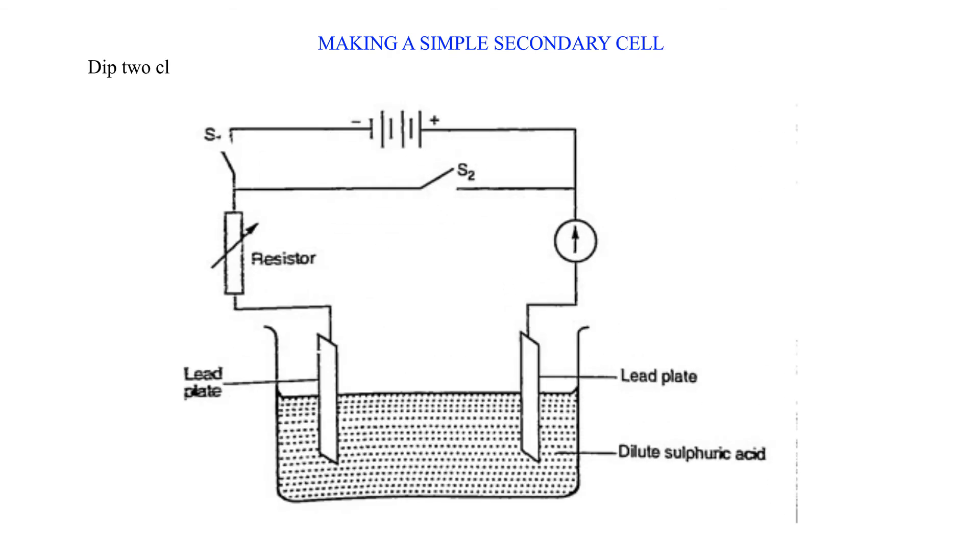Making a simple secondary cell. Dip two clean plates into a beaker containing dilute sulfuric acid. Connect the circuit as shown below. Close the switch and allow the current to flow for some time.